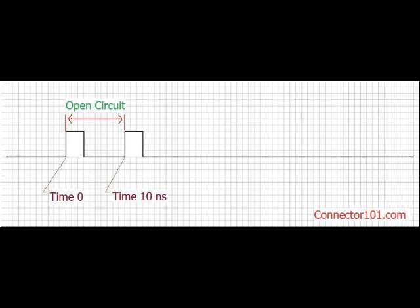If the time it takes the signal to travel to the end of the line and back is larger than the pulse width that was sent, you will be able to see two distinct pulses at your measurement point.